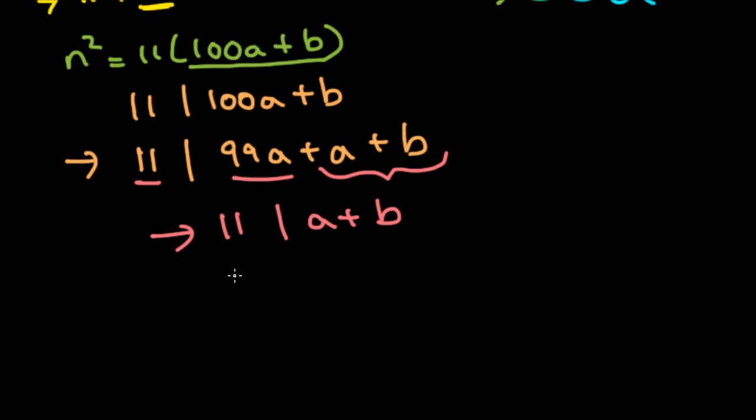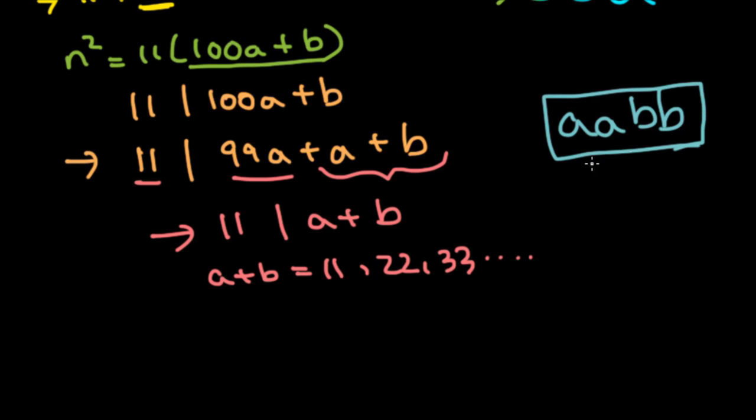So this is good because we can now consider the cases for A and B. A plus B can be 11, it can be 22, it can be 33, and so on. However, remember that AABB is a four-digit number, meaning that A is a one-digit number, and B can only be a one-digit number.